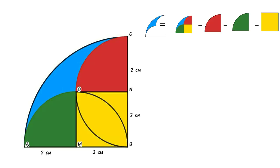So the area of the blue region equals: area of the bigger quarter circle, minus area of the red quarter circle, minus area of the green quarter circle, minus area of the yellow square.